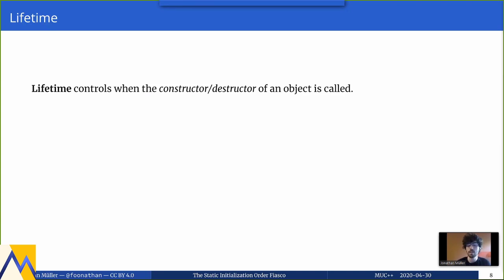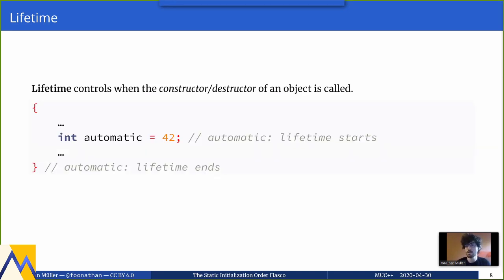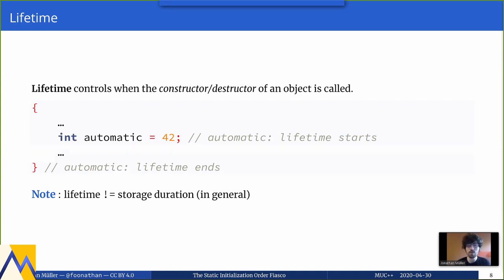The second concept is lifetime. Lifetime controls when the constructor and destructor of an object is called. For an automatic variable, its lifetime starts when control flow first reaches the definition and ends at the closing brace. Lifetime in general is not the same as storage duration — the storage may be allocated at the opening brace but the lifetime only starts once control flow reaches the definition. The same storage can also hold multiple objects with distinct lifetimes.